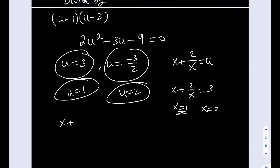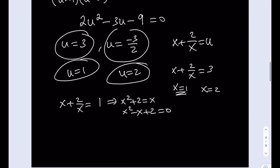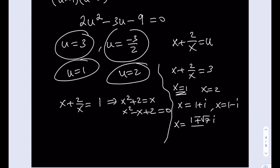If you set x plus 2 over x equals 1, you get x squared plus 2 equals x, so x squared minus x plus 2 equals 0. This equation has no real solutions — they are complex. The solutions from u equals 1 are 1 plus i and 1 minus i. From u equals 2, the solutions are 1 plus or minus root 7 times i divided by 2. And from u equals negative 3 halves, the solutions are negative 3 plus or minus root 23 times i divided by 4.